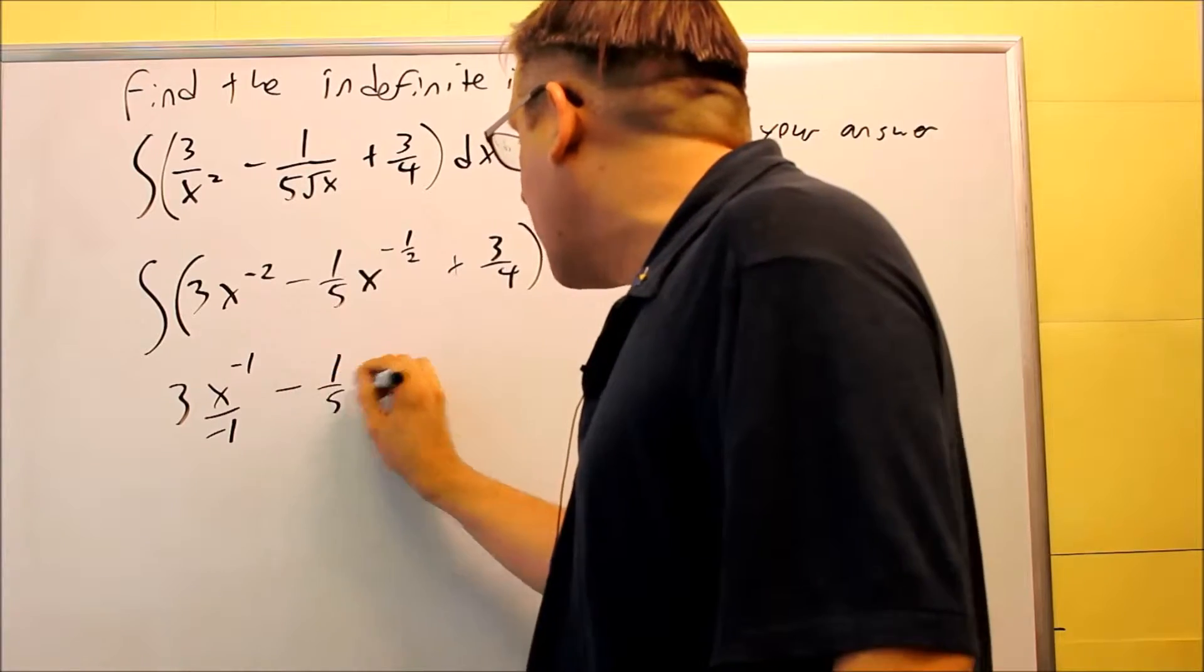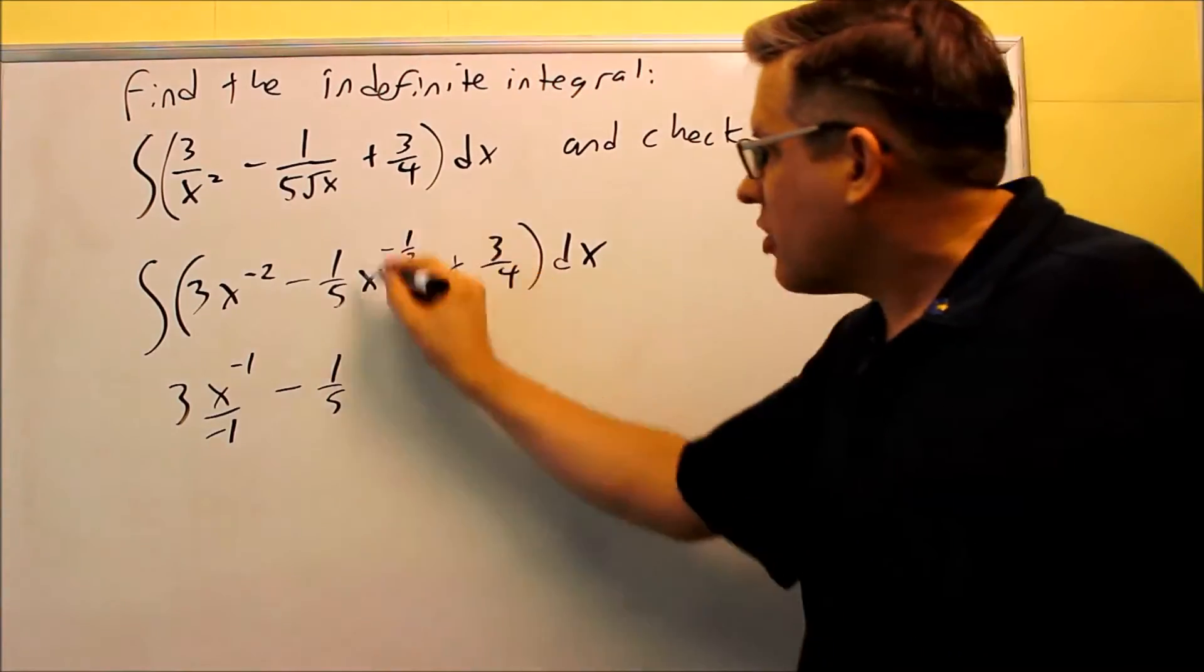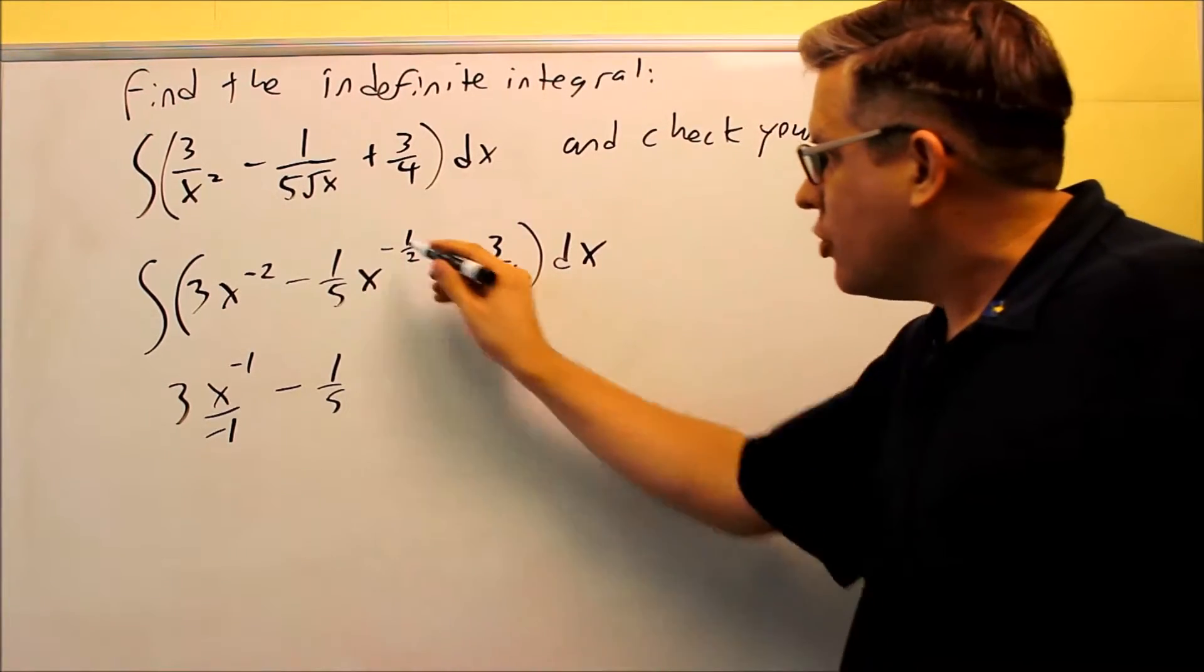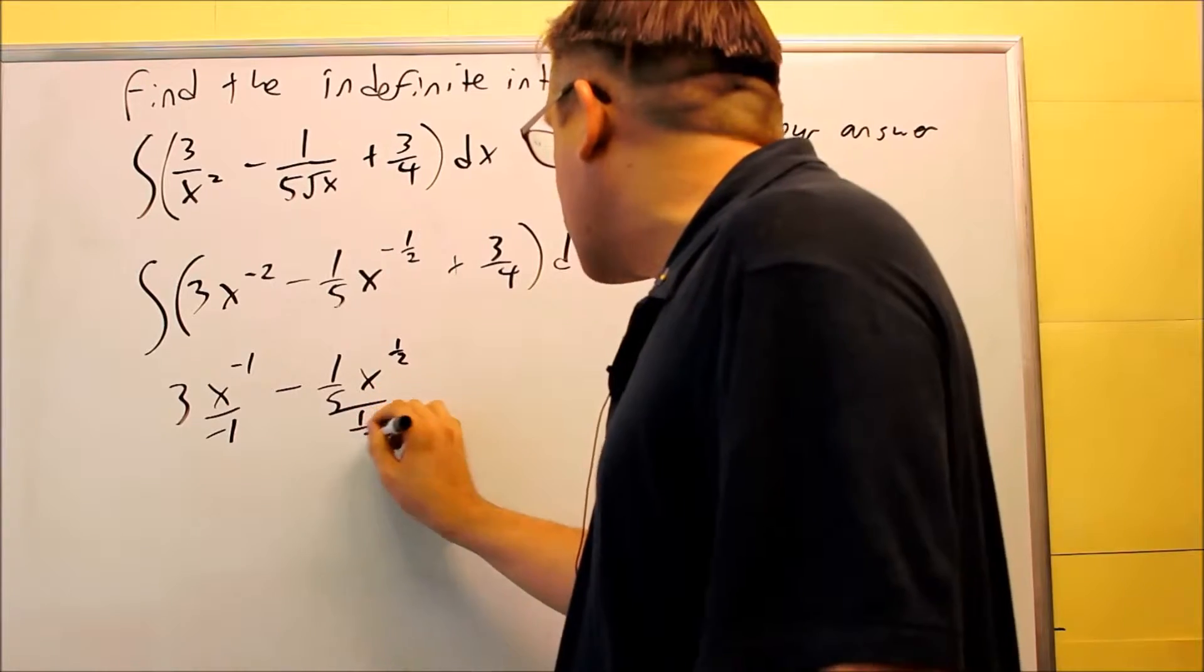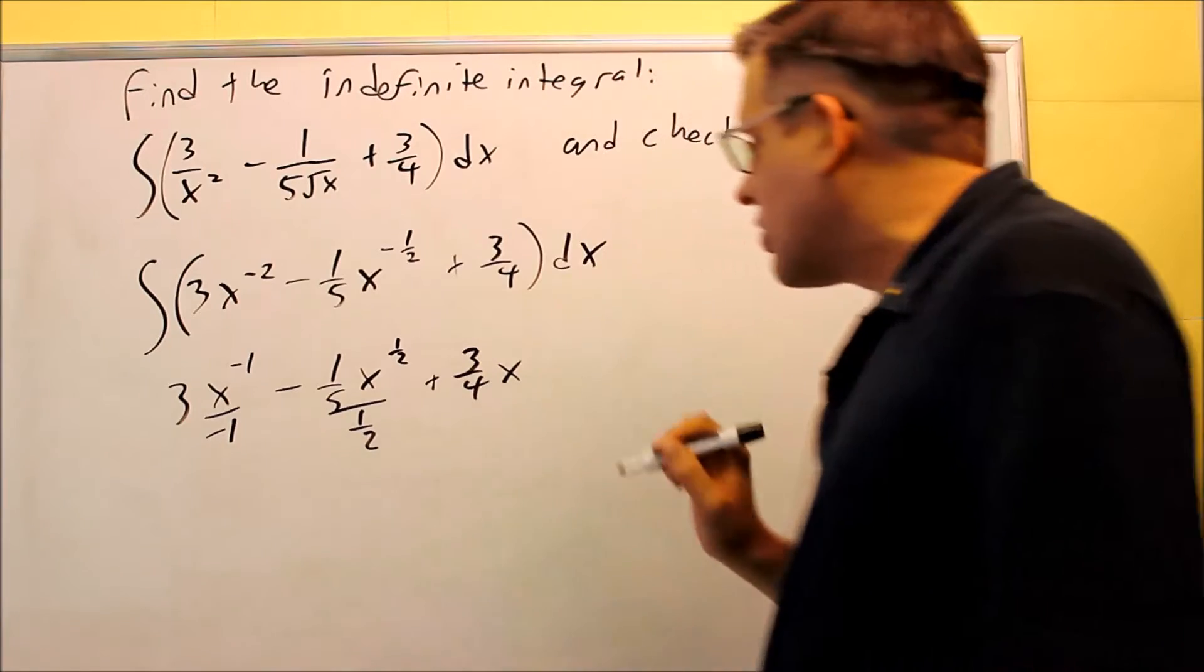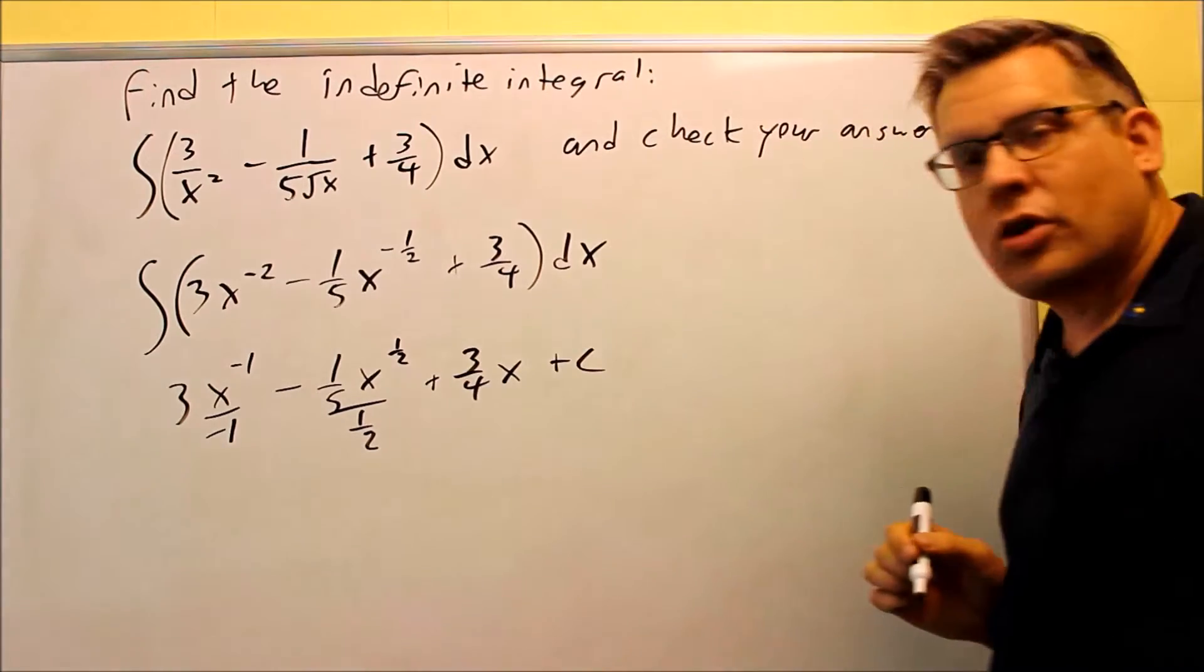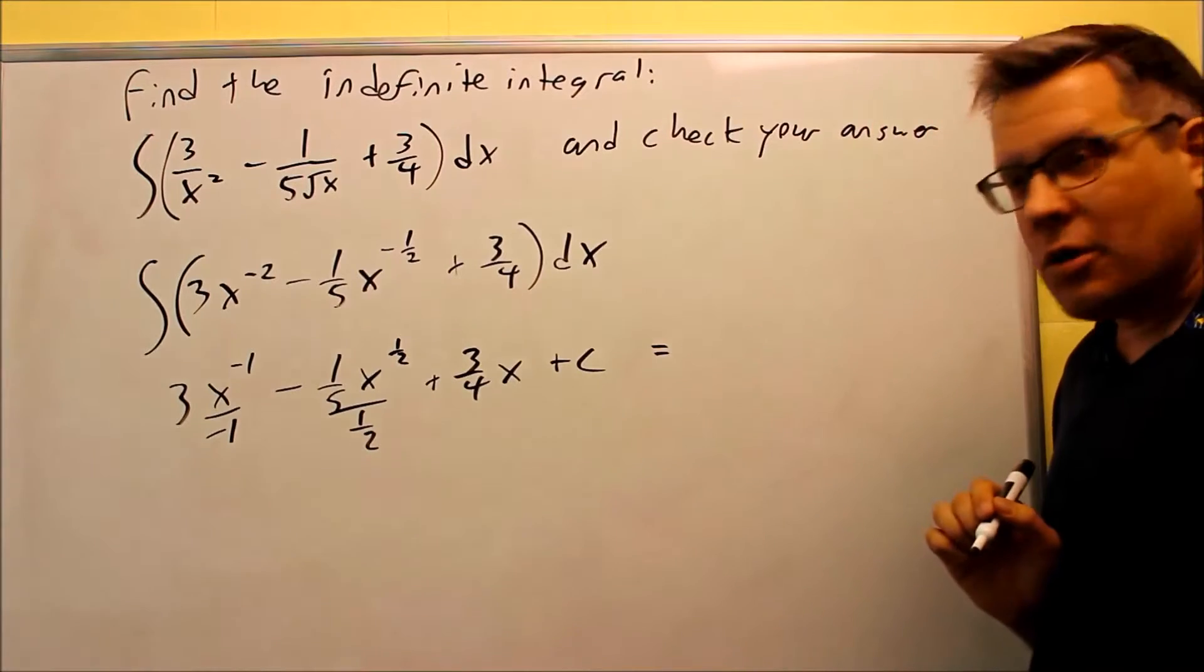You raise the power by 1, that's negative 1, divide by the new power. Next, I have a 1 fifth, and then I'm going to apply the formula to the x to the negative 1 half. Raise the power by 1, so I'm adding 2 over 2 to this, which means I'll get x to the 1 half. And I want to divide all this by 1 half. If I have a 3 fourths by itself, that means it'll just get an x next to it. Don't forget to put the plus c.